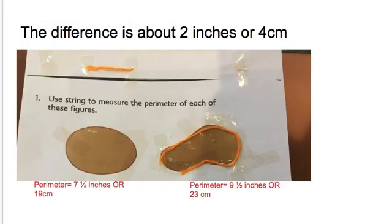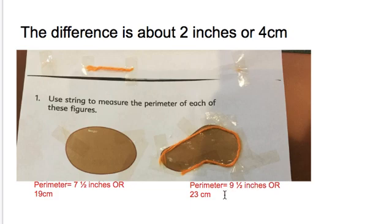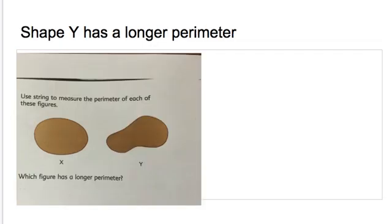Here's the string. In conclusion, we have the actual measurements for both shapes. For shape X, it was 7 and a half inches long, or 19 centimeters long. And for shape Y, it was 9 and a half inches long, or 23 centimeters long. So that's how we had fun today finding out that shape Y has a longer perimeter.